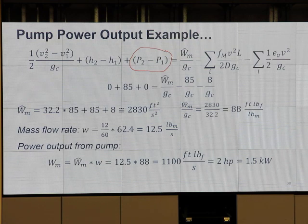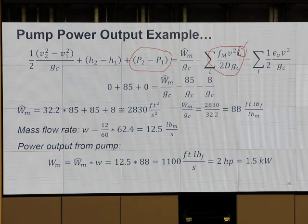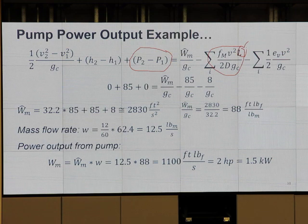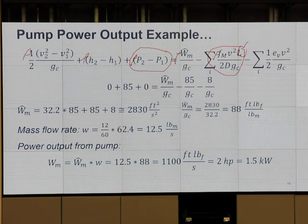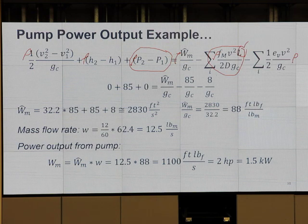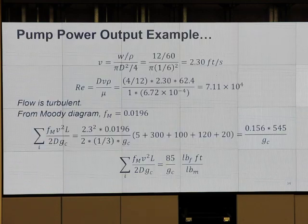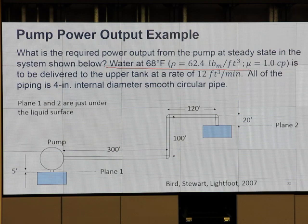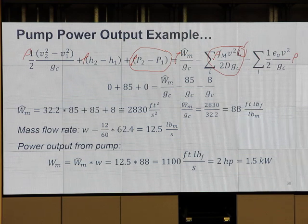The friction term is pressure drop per unit length × L, giving pressure drop, divided by density of the working fluid. So the unit is pressure per density throughout. If we use water, as in the example, everything is feet of water. But in the homework it's oil — so whatever you get is feet of oil. Make sense?